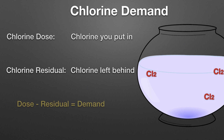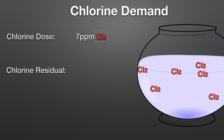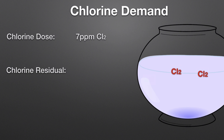By finding the difference between the dose and the residual after at least 30 minutes of contact time, you get your demand. Here's your tank with a bunch of material exerting some mystery chlorine demand. We apply a chlorine dose of 7 parts per million, and after 30 minutes of contact time we measure the excess chlorine left behind — a chlorine residual of 2 parts per million. How much chlorine was used up?